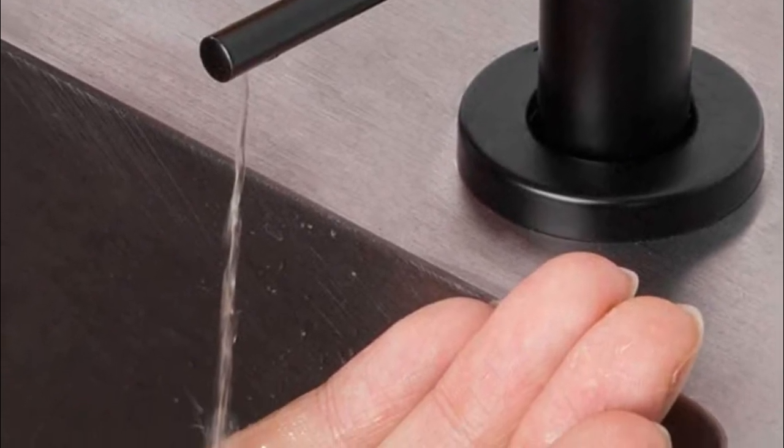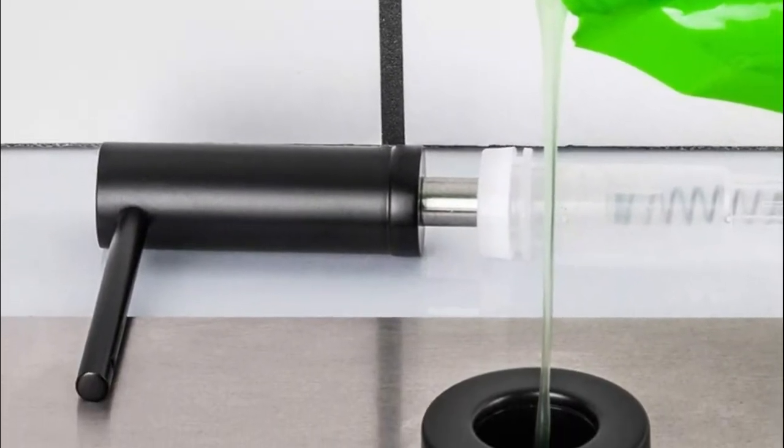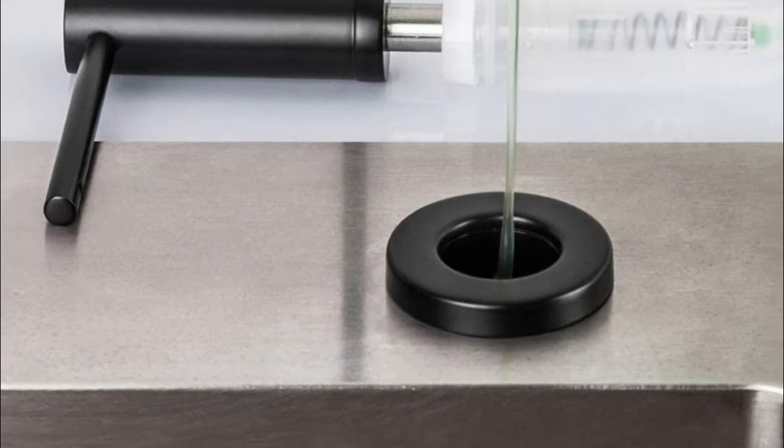This soap dispenser can be filled up with hand soap, dish soap, liquid detergent, or hand lotion. Multi-purpose use makes it useful in the kitchen and bathroom. All you need to do is wipe it down with a rag and warm soapy water, and the finish will shine and look brand new once again.